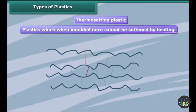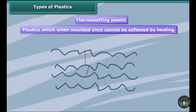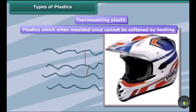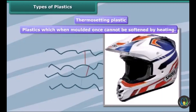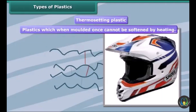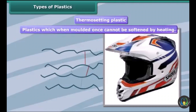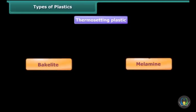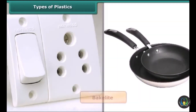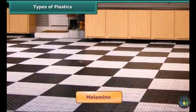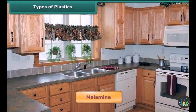Thermosetting plastics have a cross-linked arrangement of their constituent units. These can be melted and take shape once and once only. Once they are solidified, they stay in the same shape forever. On heating, they do not become soft. Bakelite and melamine are two examples of thermosetting plastics. The familiar electrical switches and handles of utensils are made of bakelite, as it is a poor conductor of heat and electricity. Melamine is used for making floor tiles, kitchenware and certain fabrics, as it is fire resistant.